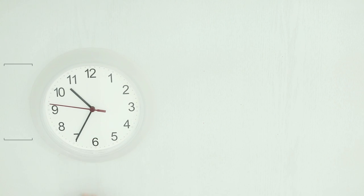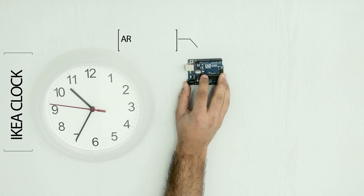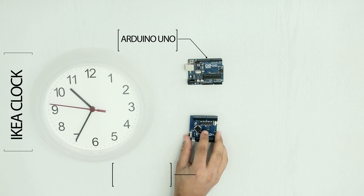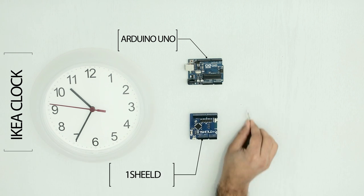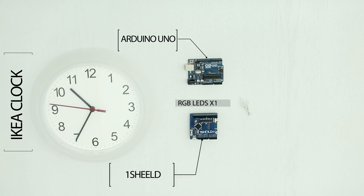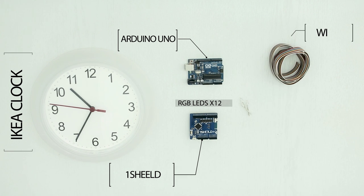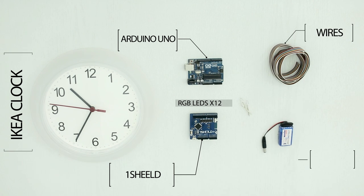You will need a cheap transparent clock, an Arduino, a OneShield, 12 RGB LEDs, jumpers and wires, and a 9V battery.